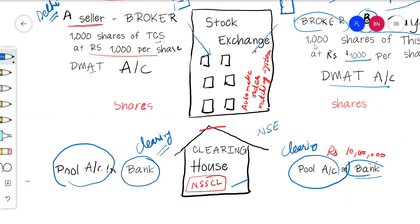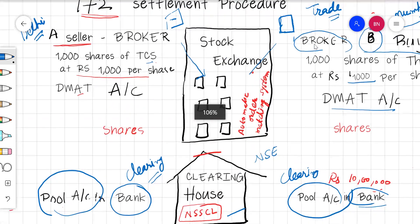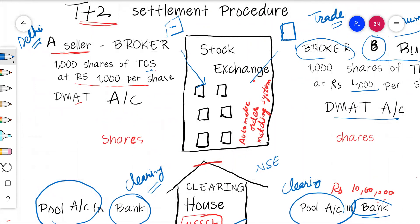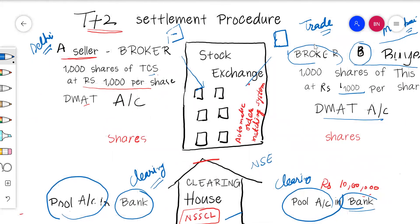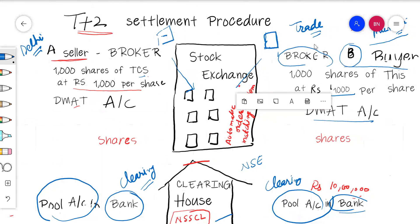Brokers deal with many clients, so transfers happen through a pool account. The pool account is opened at a clearing bank, which is linked to the clearing house. Brokers also open a DMAT account with the depository. The seller's broker has a DMAT account and the buyer's broker also has a DMAT account with the depository. This DMAT account used by the broker is also known as the pool account.